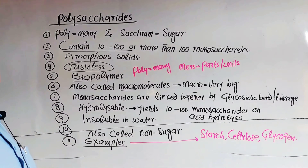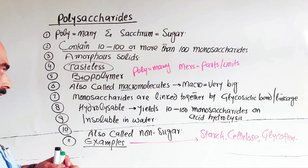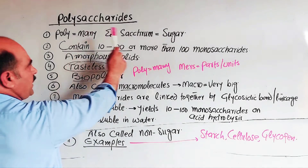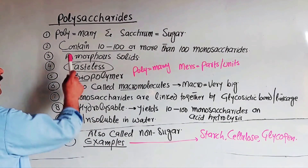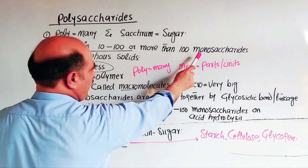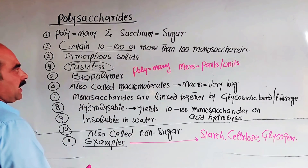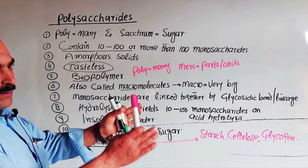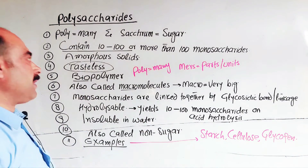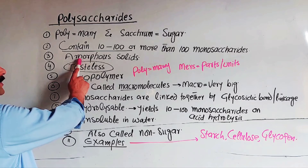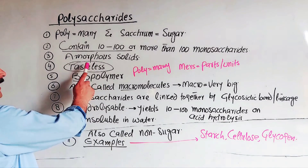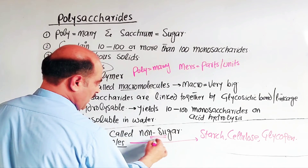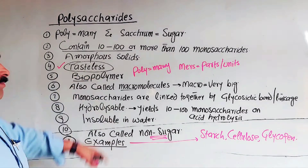To summarize the general characteristics and physical properties: the word 'poly' means many and 'saccharide' means sugar — so many sugar units combined. They contain 10 to 100 or more than 100 monosaccharide units. Their physical state is solid — in powdered or paste form. They are also called non-sugars and are biopolymers.